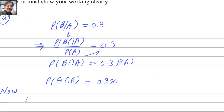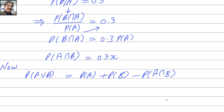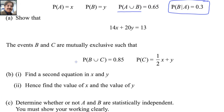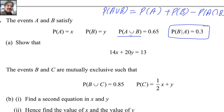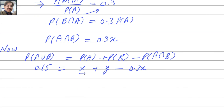Now we write the formula: probability of A union B equals probability of A plus probability of B minus probability of A intersection B. We have all values. Probability of A union B is 0.65, probability of A is X, probability of B is Y, minus 0.3X. Combining like terms: 0.7X plus Y equals 0.65.